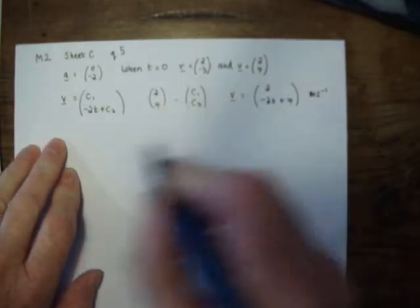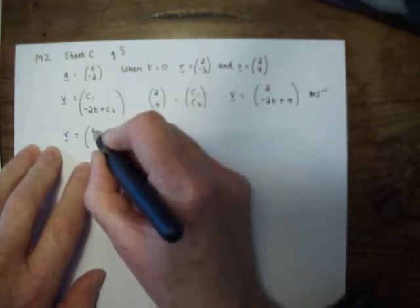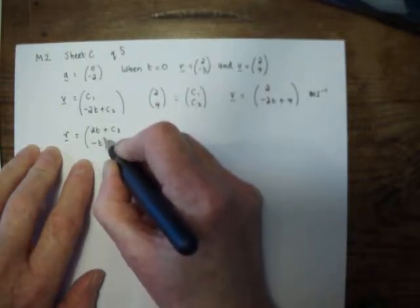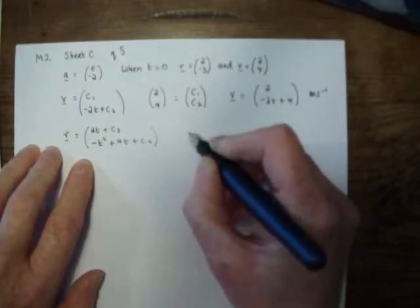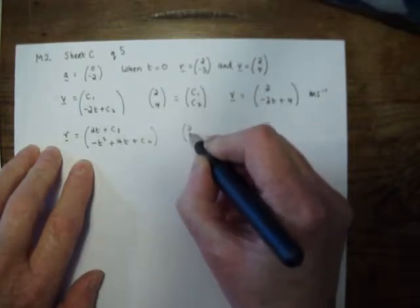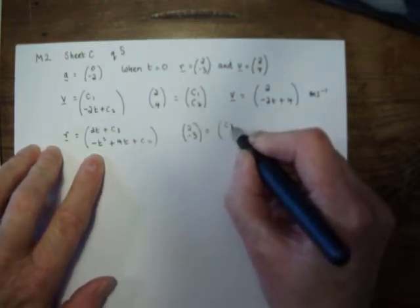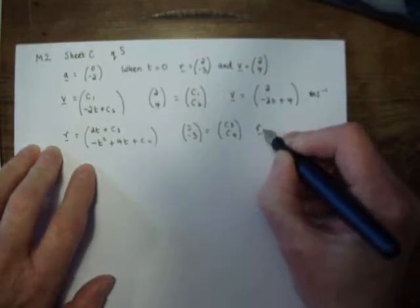Integrating the velocity to get the position vector, we get 2t plus c3, and minus t squared plus 4t plus c4. Again, initial conditions tell us that when t is 0, we're left with those two constants of integration.